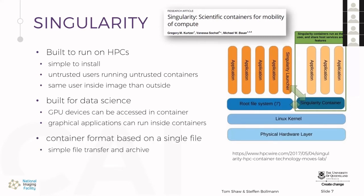Docker uses a layered file system, which is great for web use cases but less ideal for science. If you want to transfer an image to a supercomputer, you don't want to transfer hundreds of layers of little files. Singularity solves this by using a single container format stored in a single file, which is very easy to transfer and archive. You can write up your analysis in a container, put it in a single file, store it with your data, and if someone wants to execute it in the future, they just can.